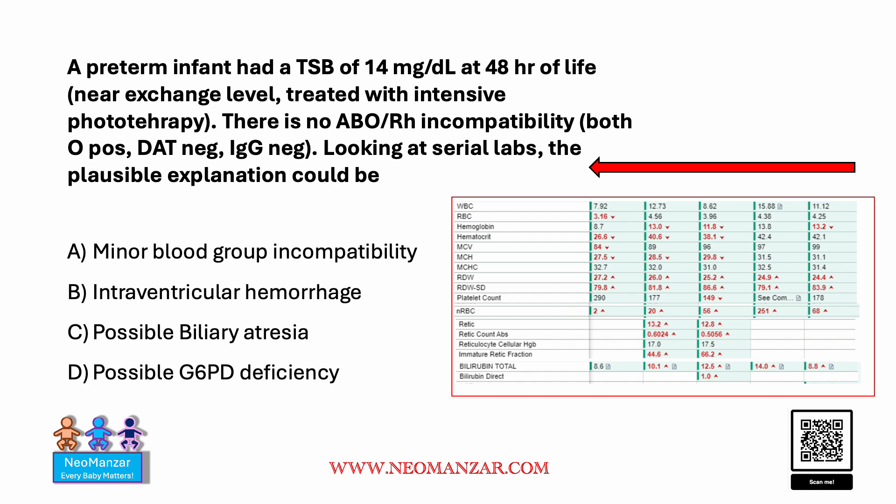It was treated with intensive phototherapy. There is no ABO or Rh incompatibility — both mother and infant are O positive, DAT negative and IgG negative by the blood bank. So looking at the serial labs, what could be the plausible explanation for this hyperbilirubinemia?